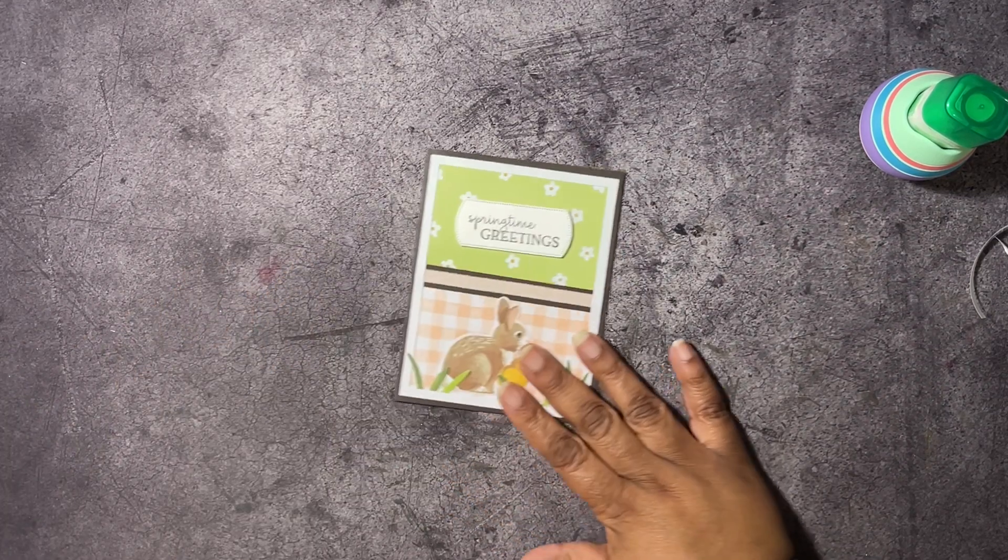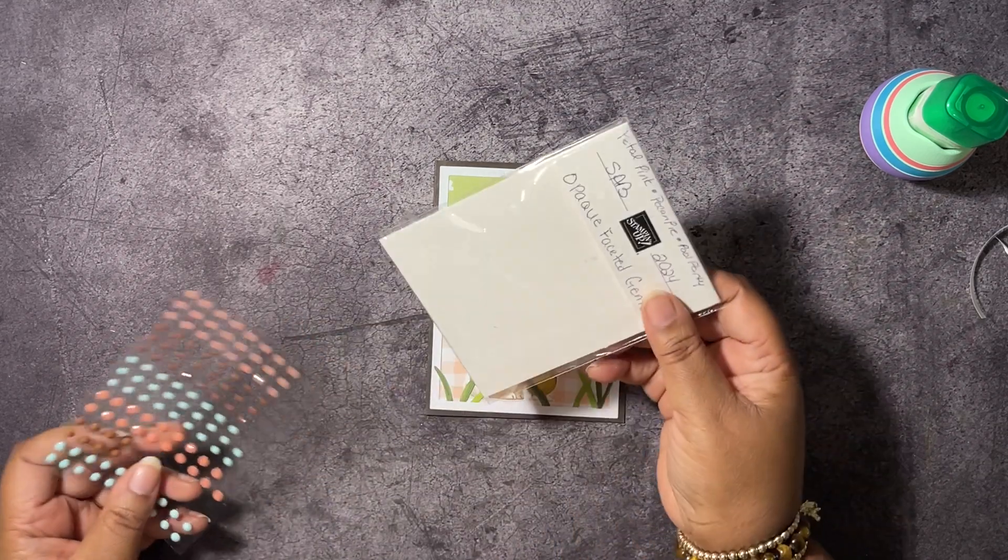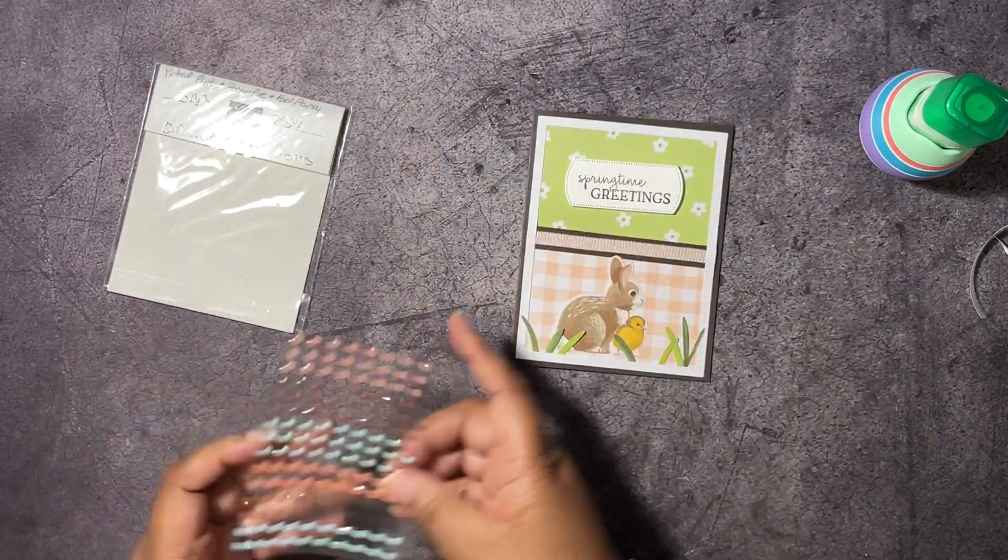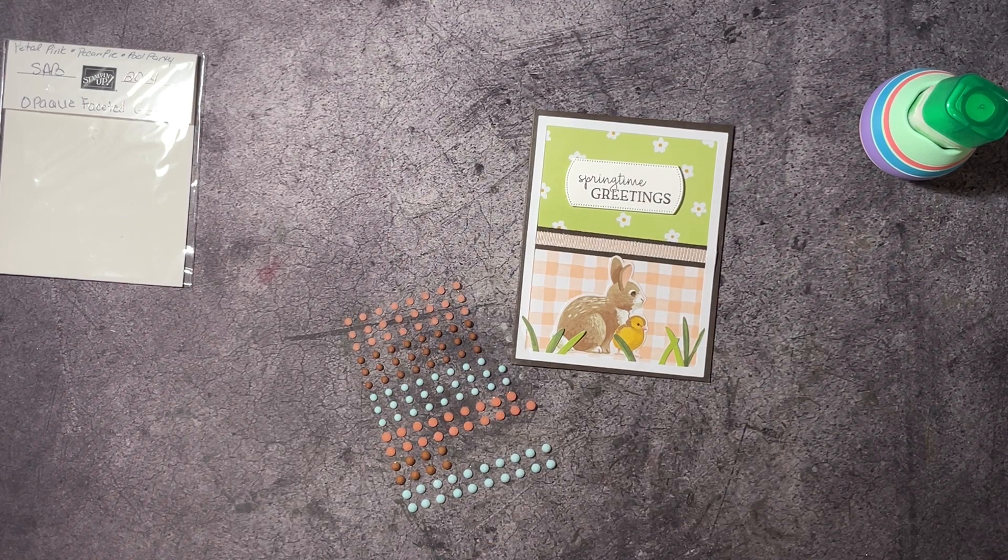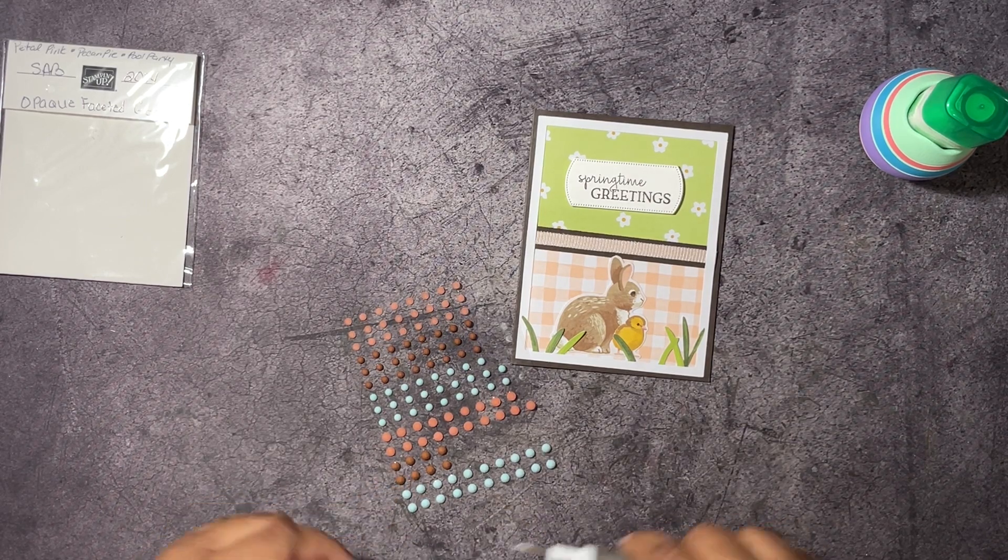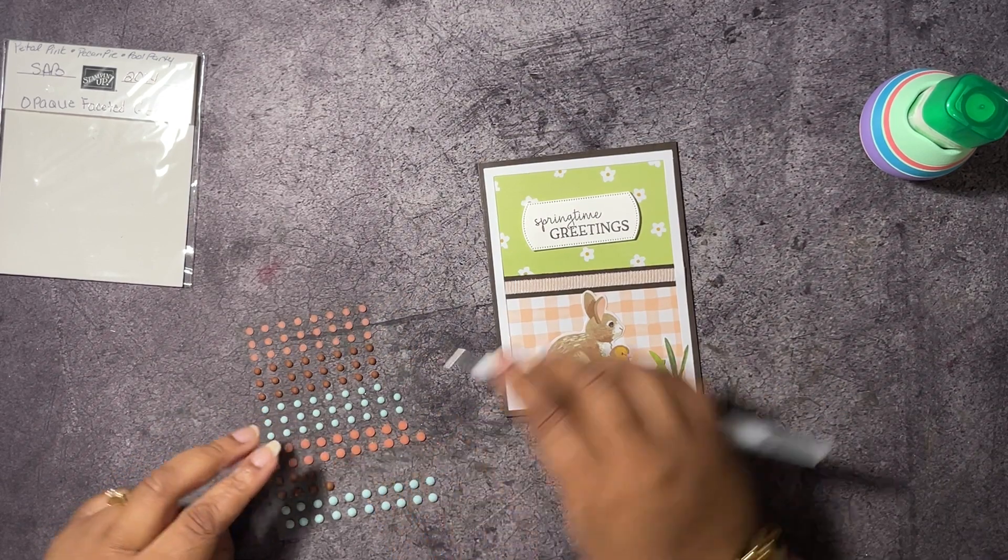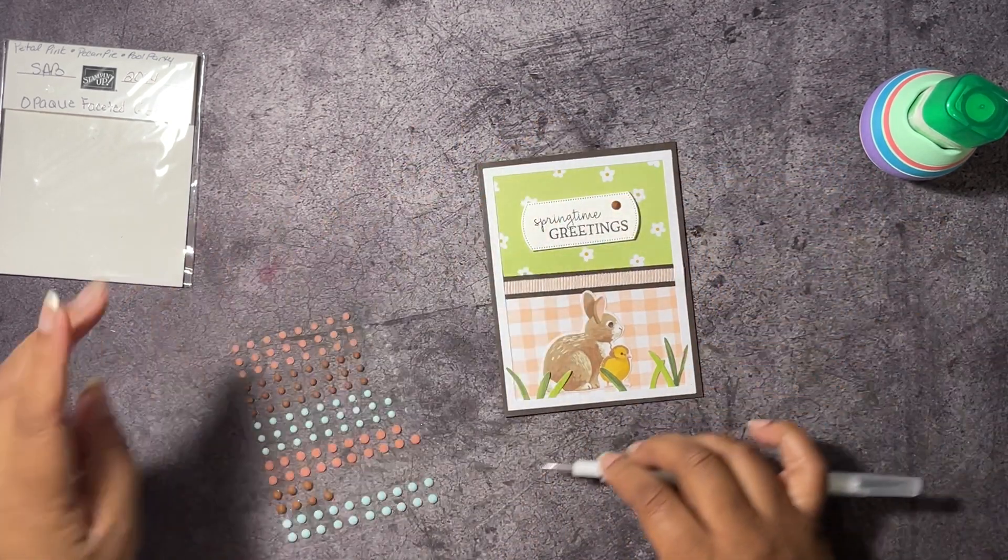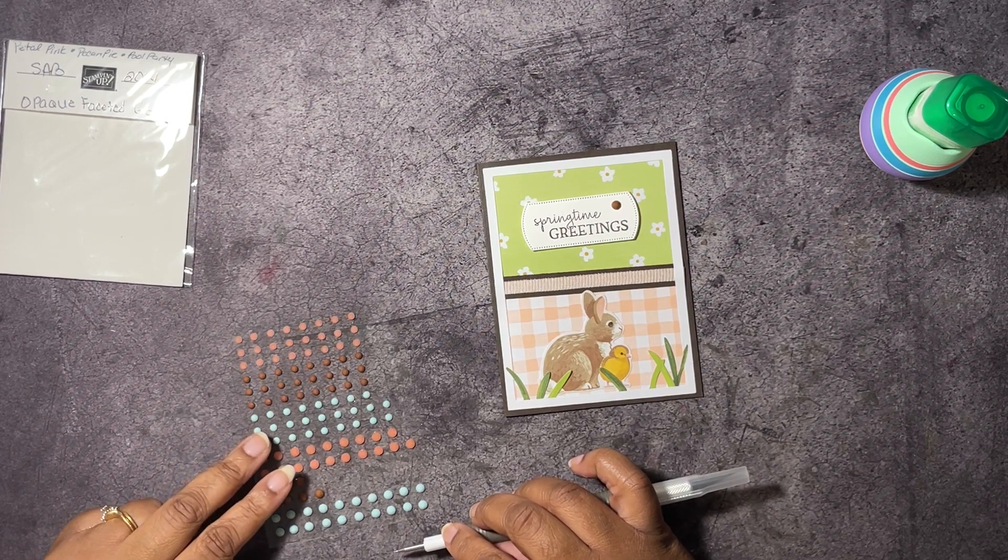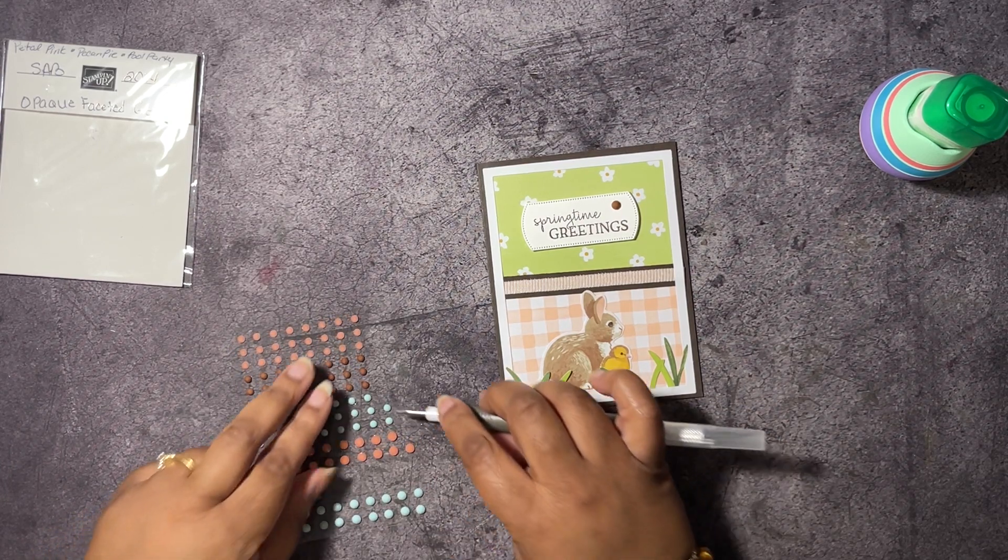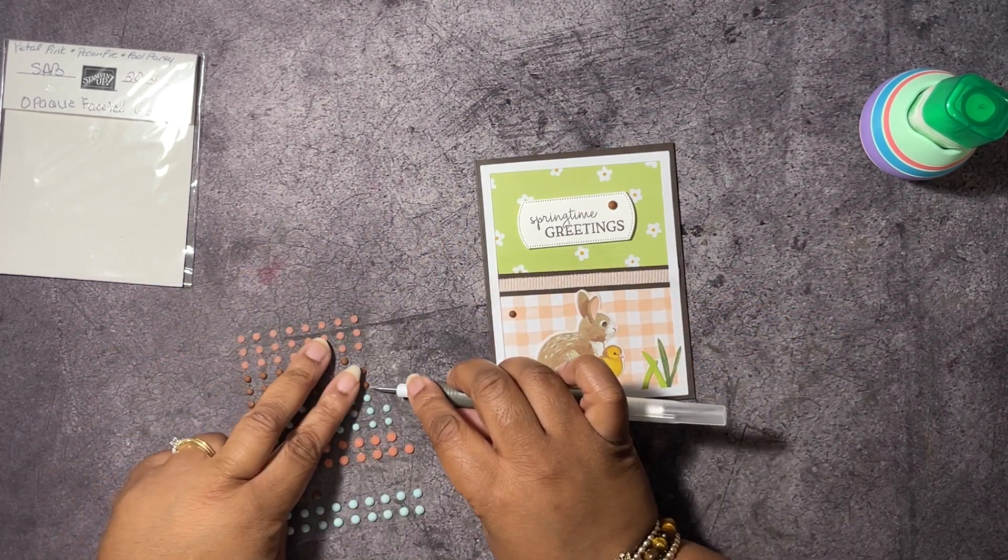Okay so I am going to use the Celebration Opaque Faceted Gems. These are free with the $50 purchase, one of your choices. I think I want to put one up here of this Pecan Pie. Let's put two over here, I'll use another big one.